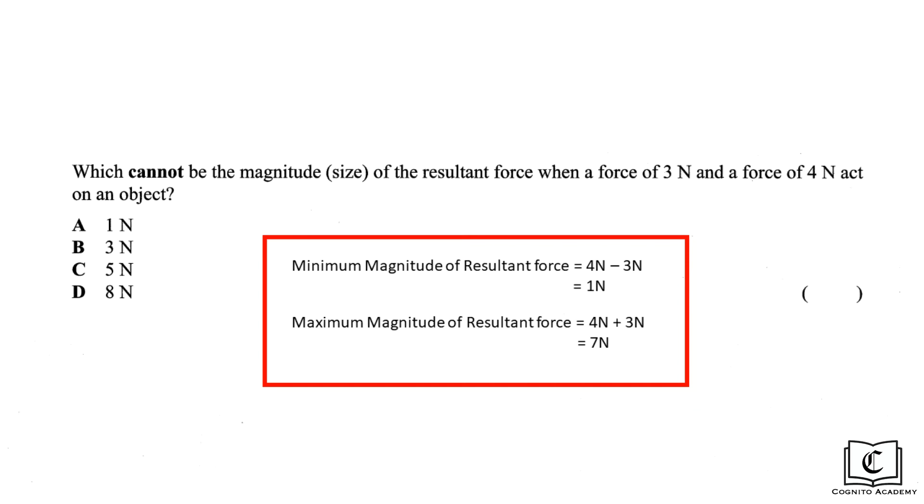And here, we have option D, 8 newtons. So option D, 8 newtons, cannot be the magnitude of the resultant force and the answer is D.